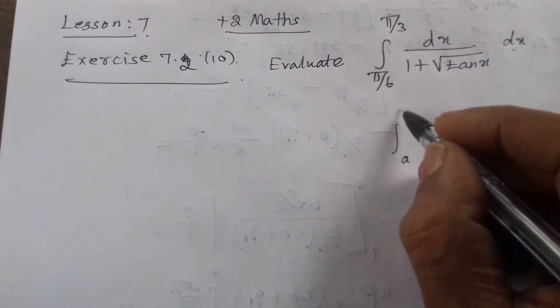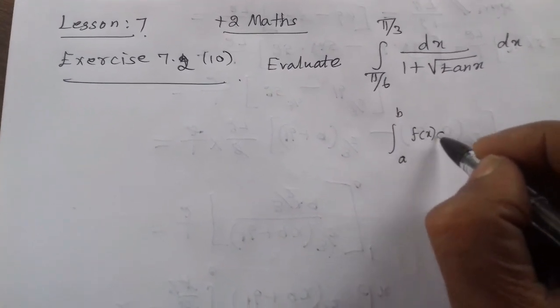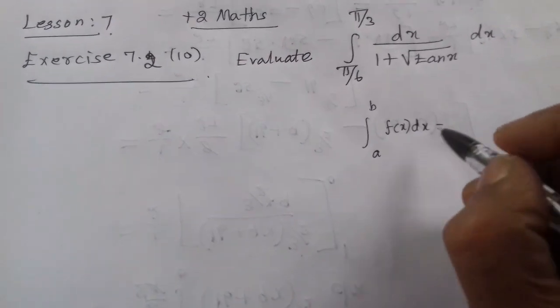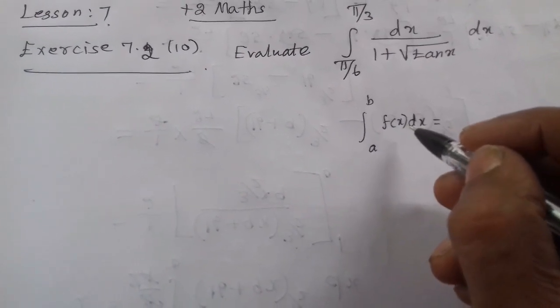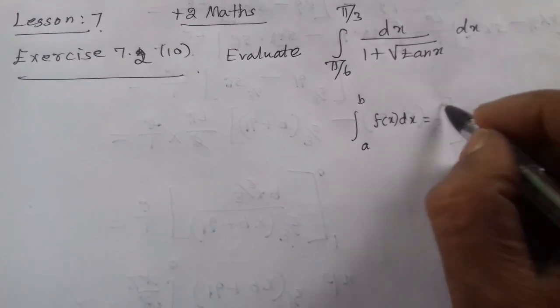Integral a to b, f(x) dx equals - if you add a limit, this is a property and the property is a problem.